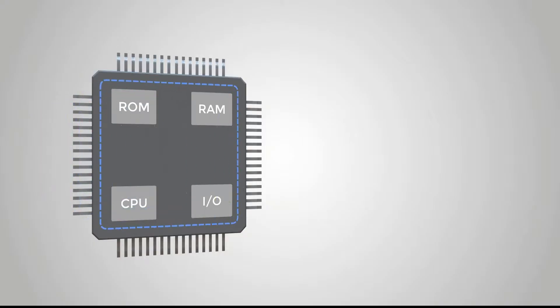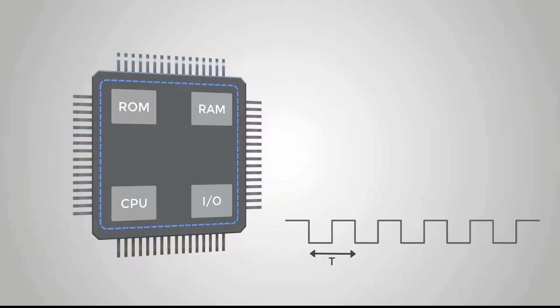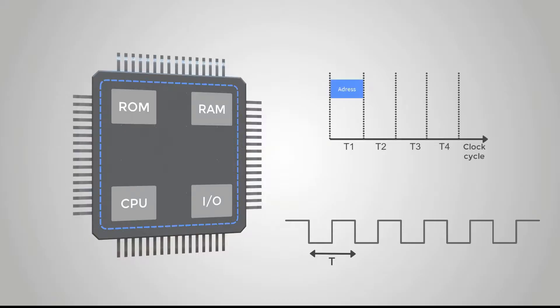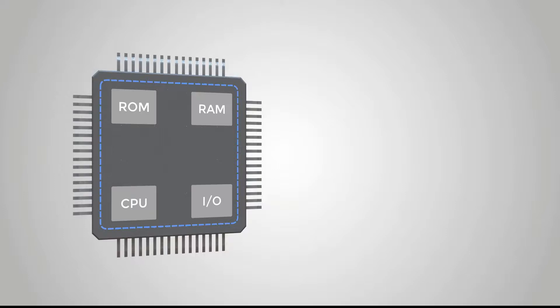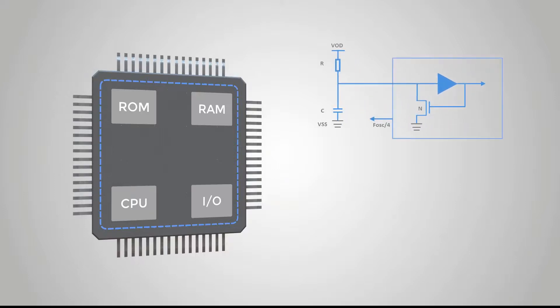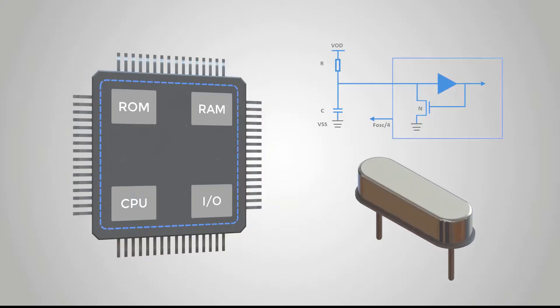Each module in the microcontroller works synchronously according to a unified beat, which comes from the clock of the microcontroller. The clock signal is a high and low level interval signal. The microcontroller can only execute one instruction in a clock cycle, and the time unit of the microcontroller is an integer multiple of the clock cycle. The clock signal comes from the oscillator, which is divided into internal RC oscillator and external crystal oscillator.